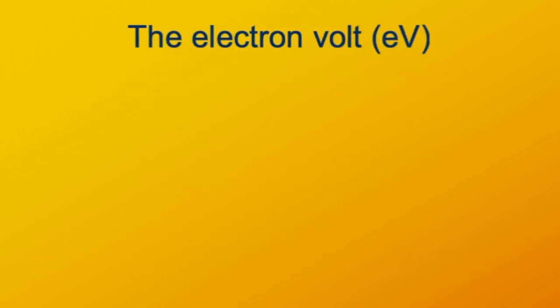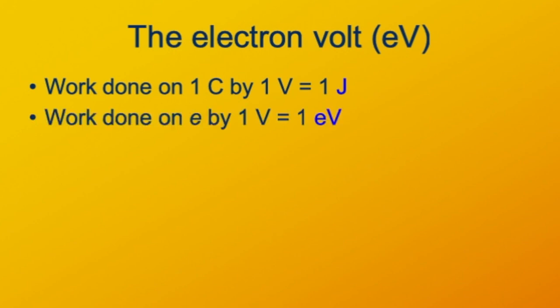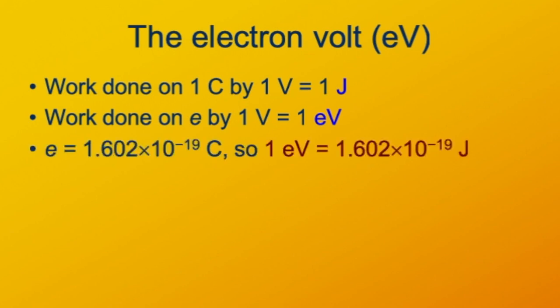This is the electron volt. The work done on one coulomb of charge by a potential change of one volt is one joule, because a volt is a joule per coulomb. Likewise, if you do work on a charge of E — the elementary charge, which is the charge of a proton — by one volt, then that energy is one volt times one electron charge, called an electron volt. Since the elementary charge is 1.6 times 10 to the negative 19th coulombs, one electron volt is 1.6 times 10 to the minus 19th joules.